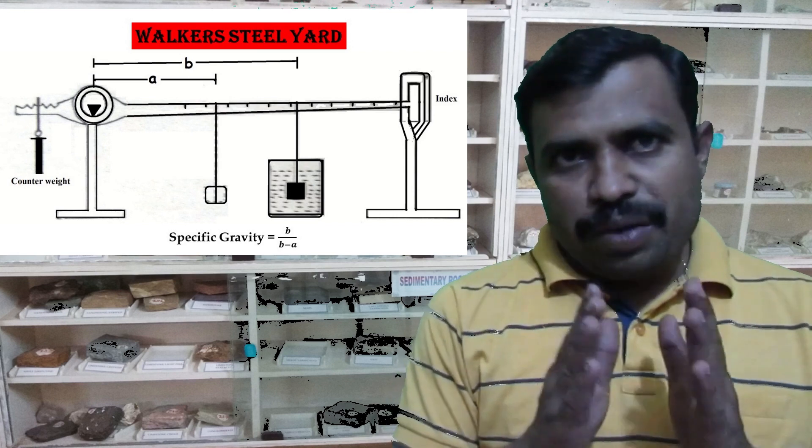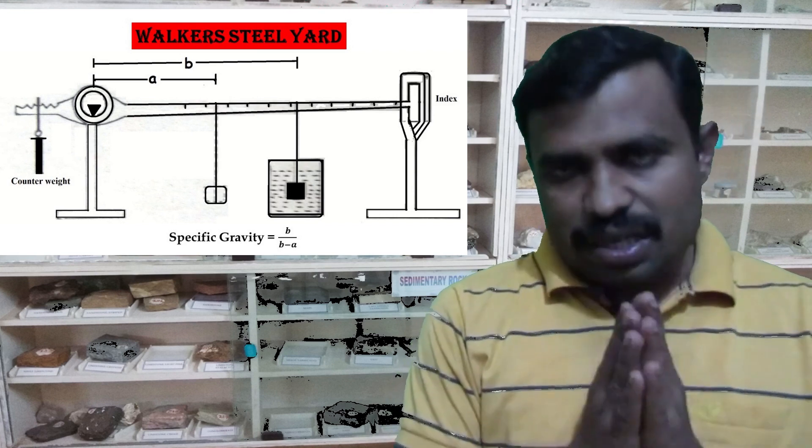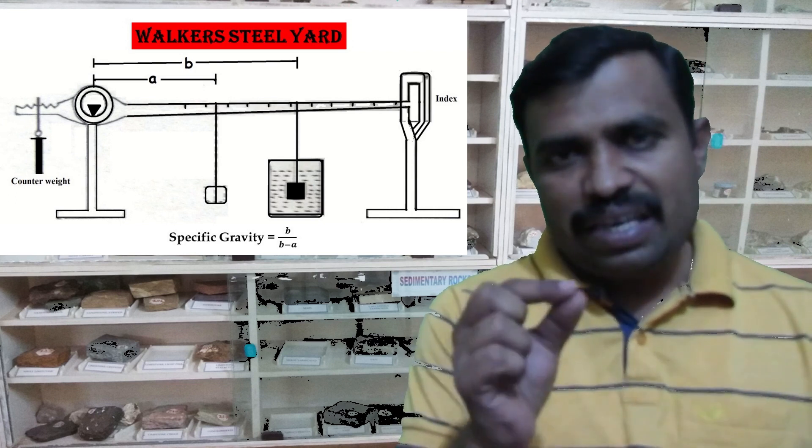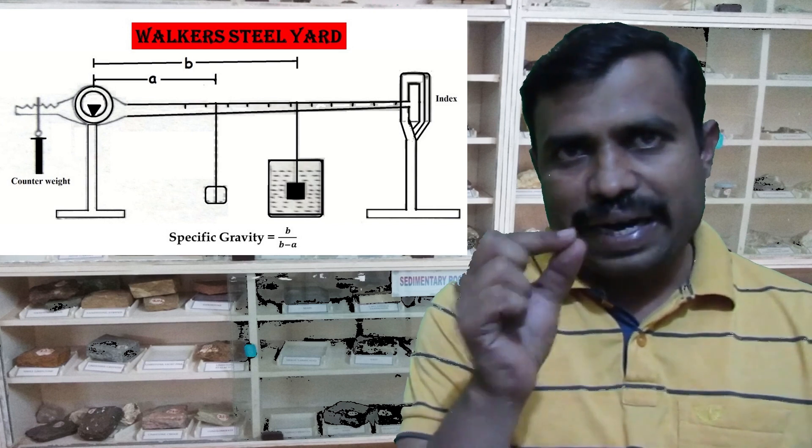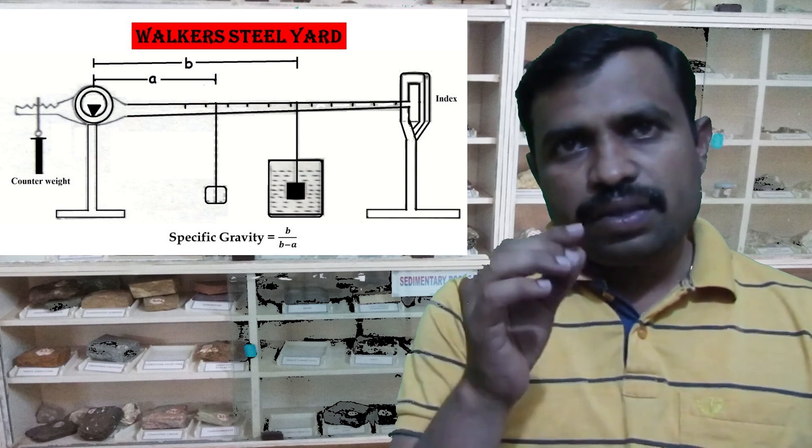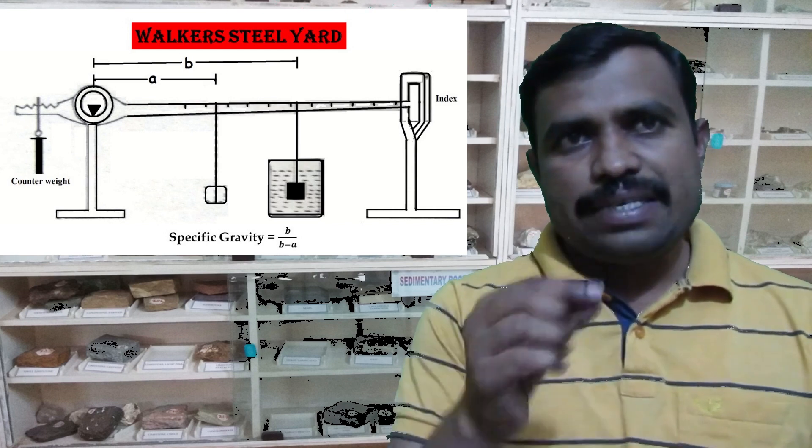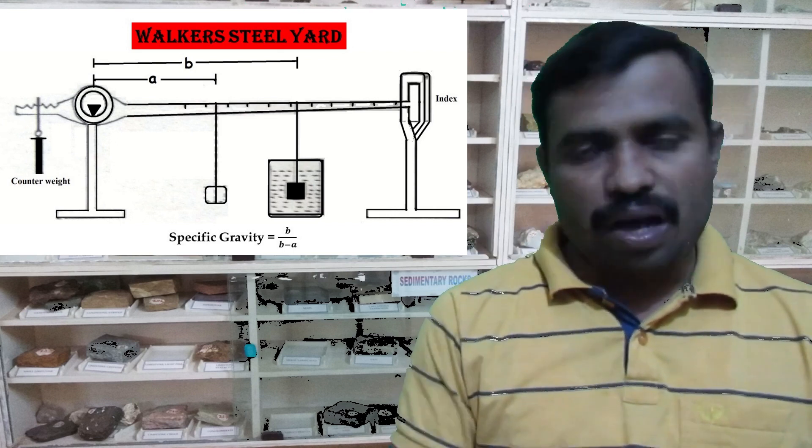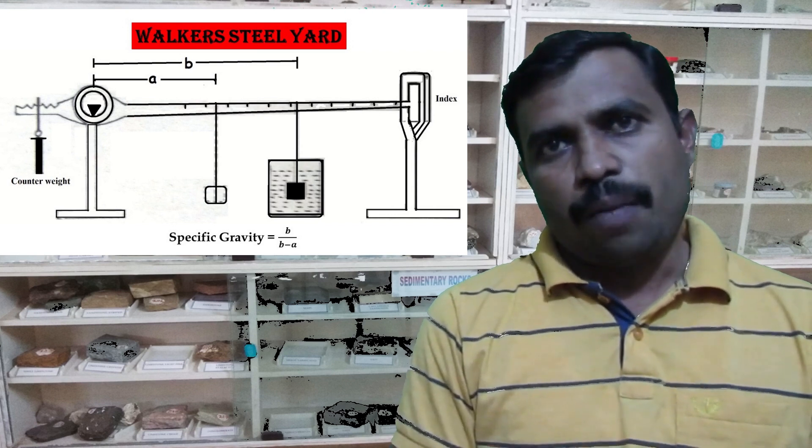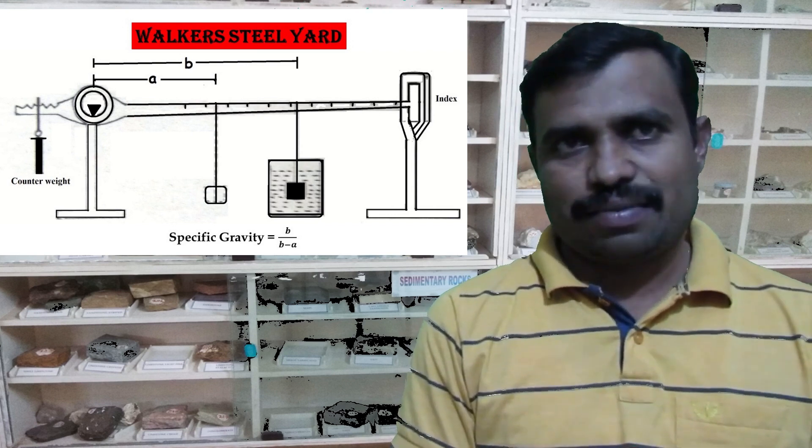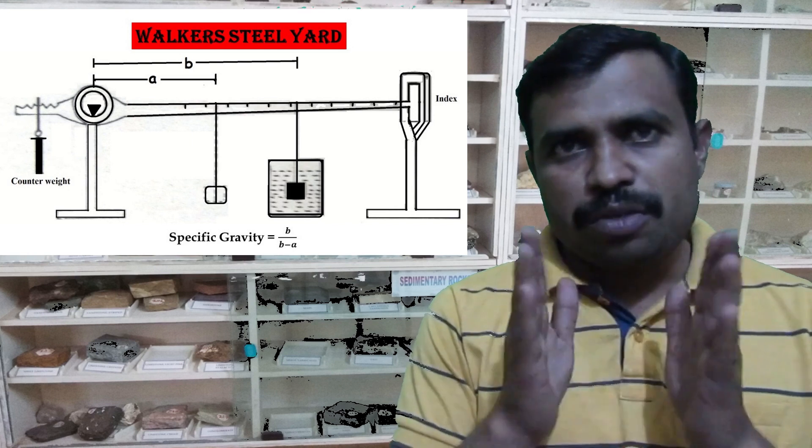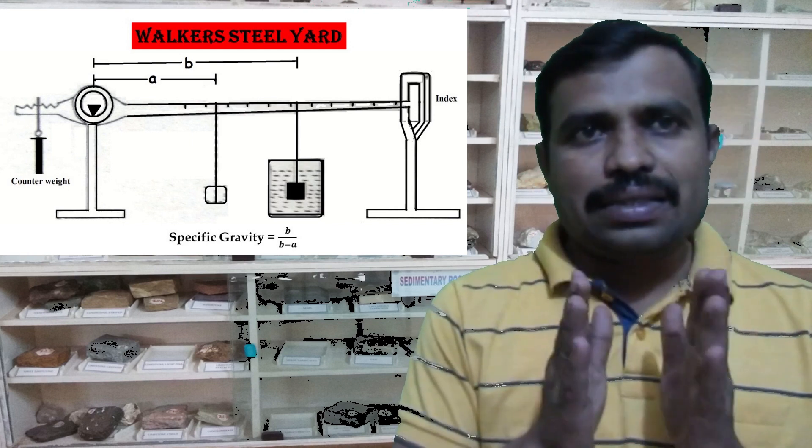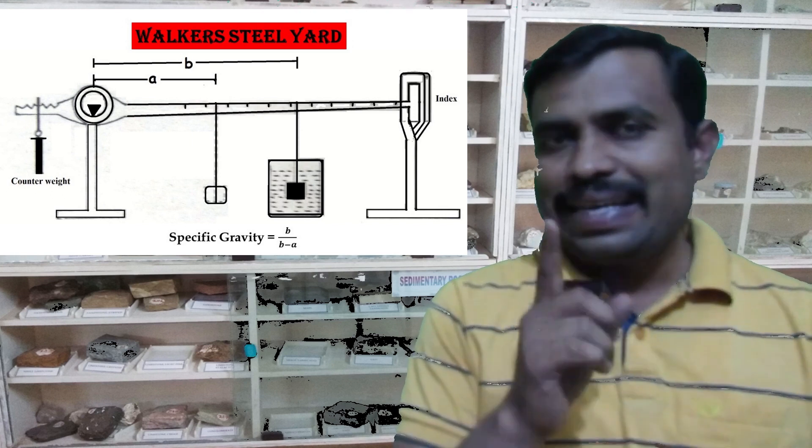The mineral specimen whose specific gravity is to be determined is suspended by a very thin nylon thread from the longer arm. It is moved along the graduated arm so as to bring the end of the arm opposite to the fixed index mark. The position of the specimen on the arm is noted. Let us assume that the reading is A.